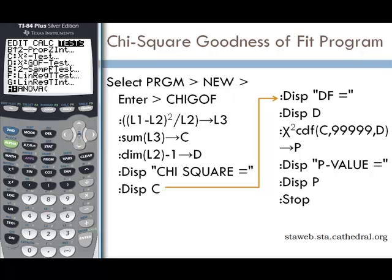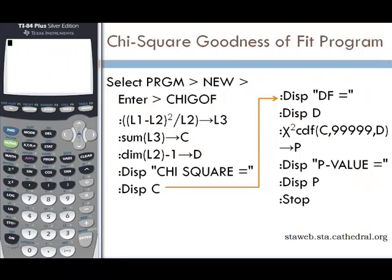We're going to write a program for our calculator to do the chi-squared goodness of fit test from scratch. Press SECOND QUIT to get back to home. To write a program, we will go to PRGM, scroll to NEW, and press ENTER.